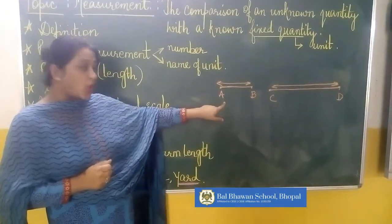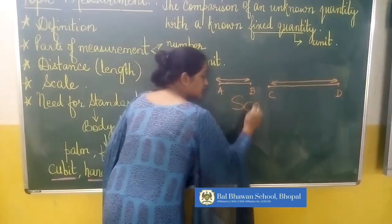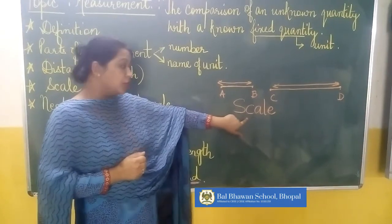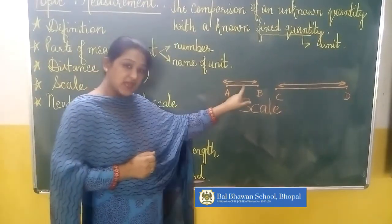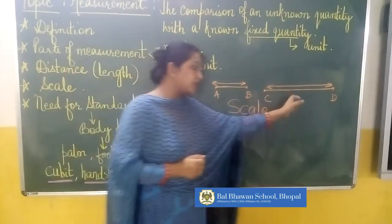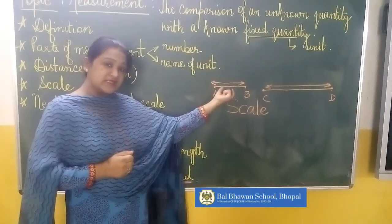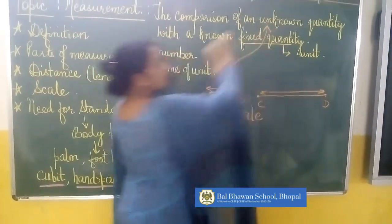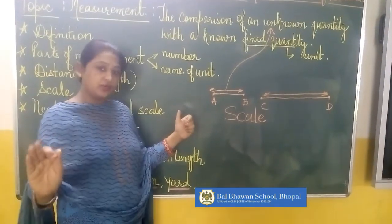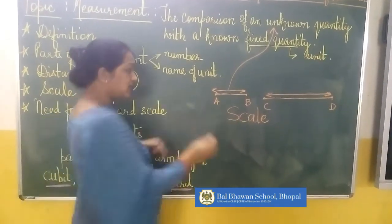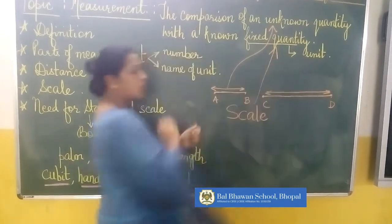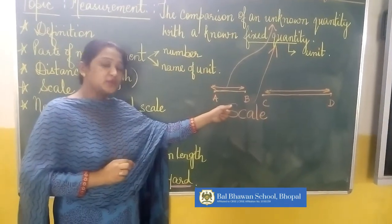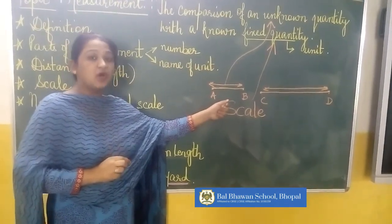So here we make use of a scale. This scale will help me to find the length of line segment AB and the length of line segment CD. Line segment AB is the unknown quantity — I don't know it. And this scale is a fixed quantity — it is fixed, I know it. That is how we are able to measure the length of a line segment.